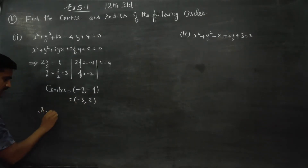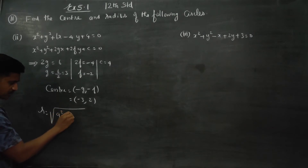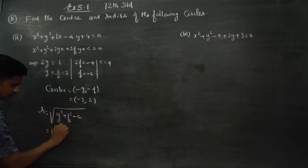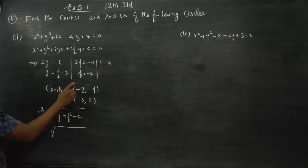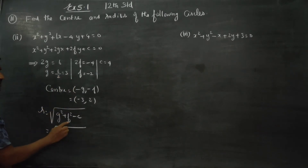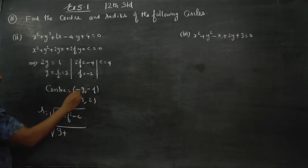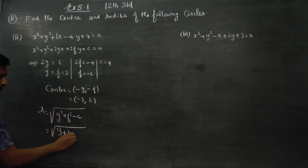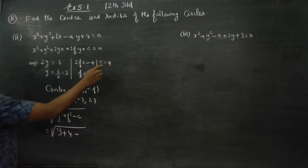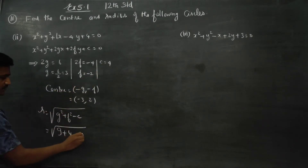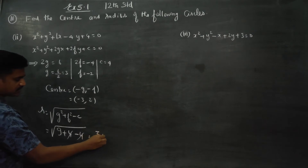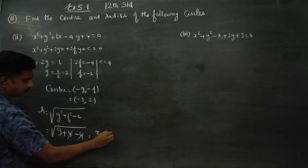The radius is equal to the square root of g² + f² − c. So that is square root of 9 plus 4 minus 4, which gives square root of 9. The answer is 3 units. This is my radius.